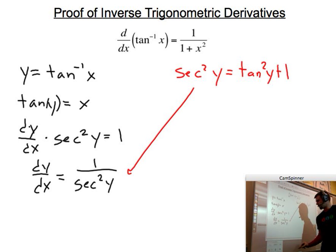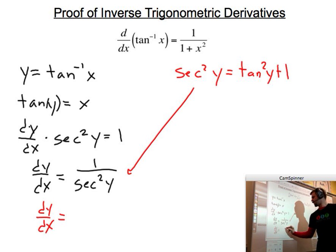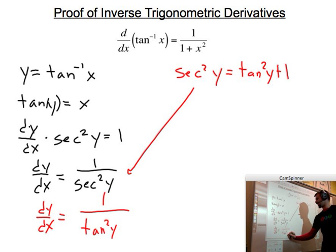And so, instead, we have dy/dx, I'll do this in red now, as 1 over, instead of secant squared, I'll do tangent squared of y plus 1.